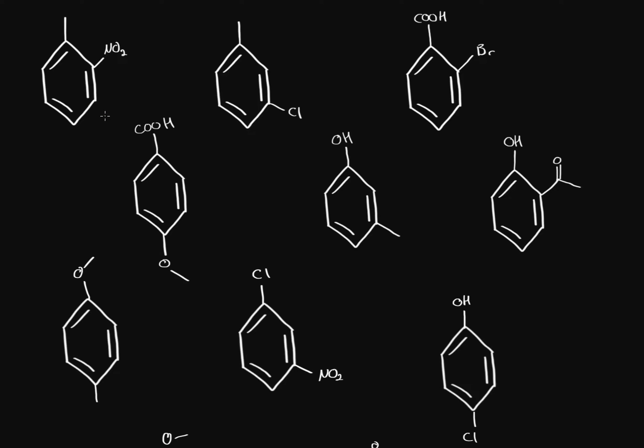The last thing to consider are halogens. Halogens are deactivating, but they're also ortho and para directors. They are electron-withdrawing; however, they still direct ortho and para because of the double bonds they can form with the sigma complexes. For now, let's figure out in which positions the nitrate will attach.